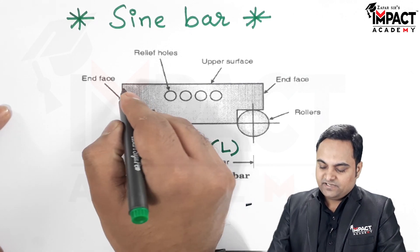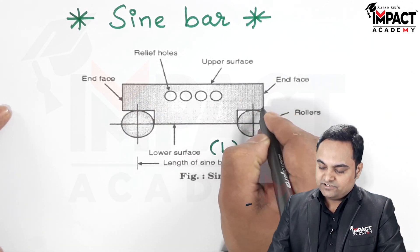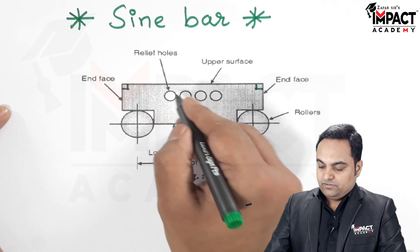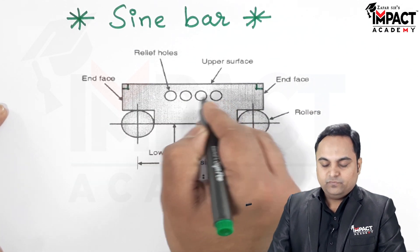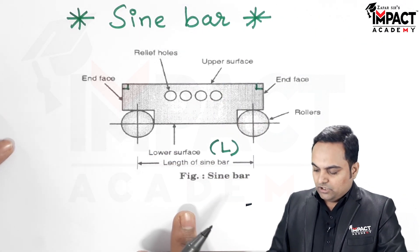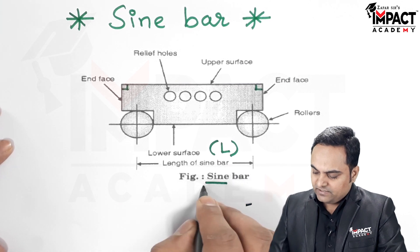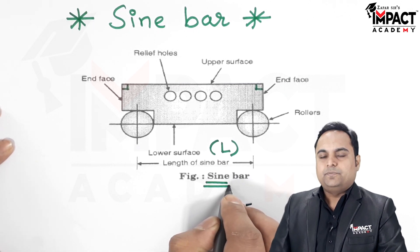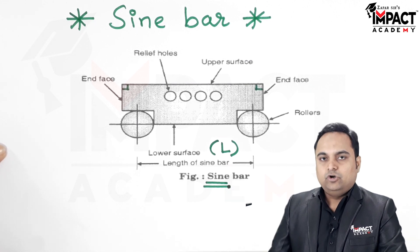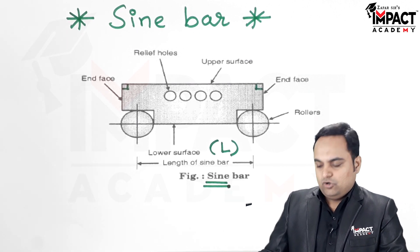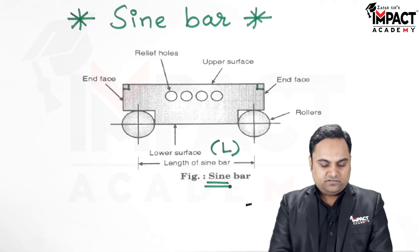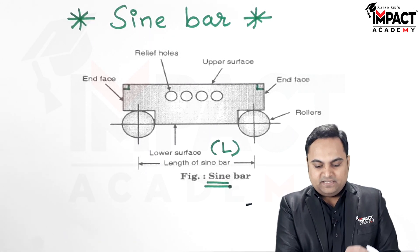There are also perpendicular surfaces called end faces, and relief holes are provided with the help of which the sine bar can be fixed at a particular location. It is called a sine bar because it uses the principle of trigonometry — specifically the sine function — to find a particular angle or to check the flatness of a surface.